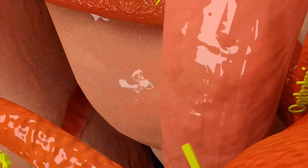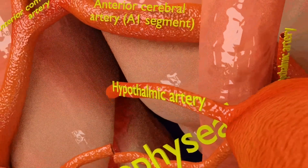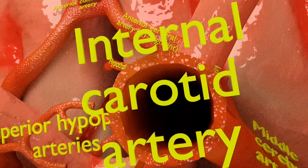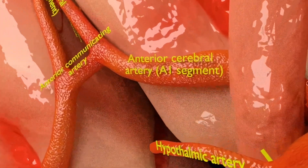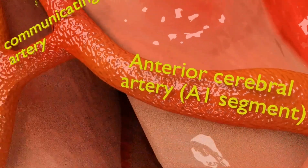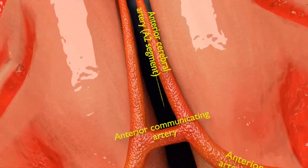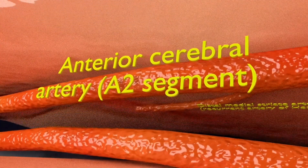The ophthalmic artery is a branch of the ophthalmic portion, C6 segment, of the internal carotid artery. The hypothalamic artery arises from the anterior cerebral artery. The anterior cerebral artery forms the anterolateral portion of the Circle of Willis. The anterior communicating artery connects the two anterior cerebral arteries.